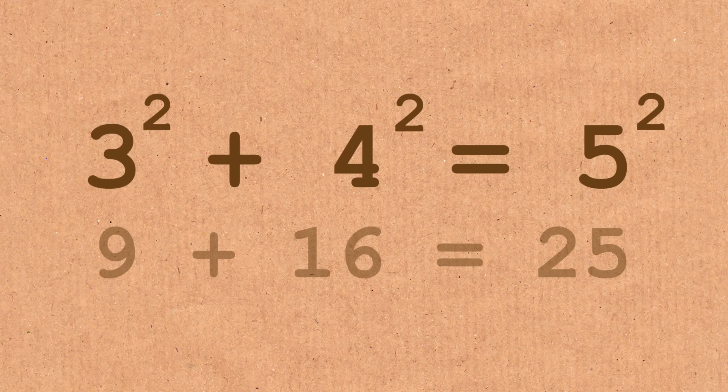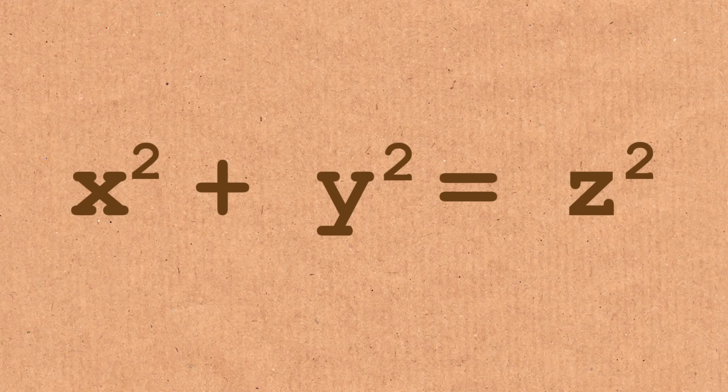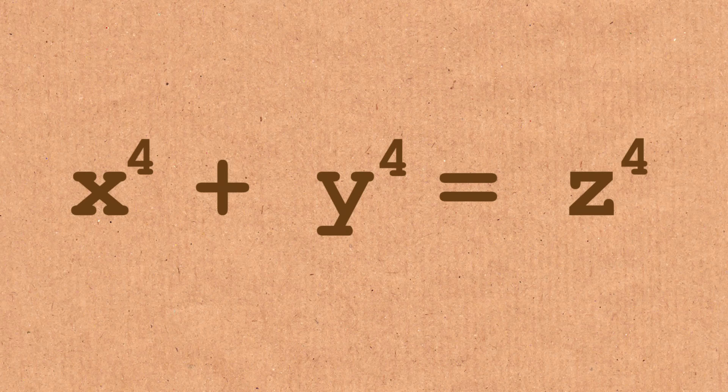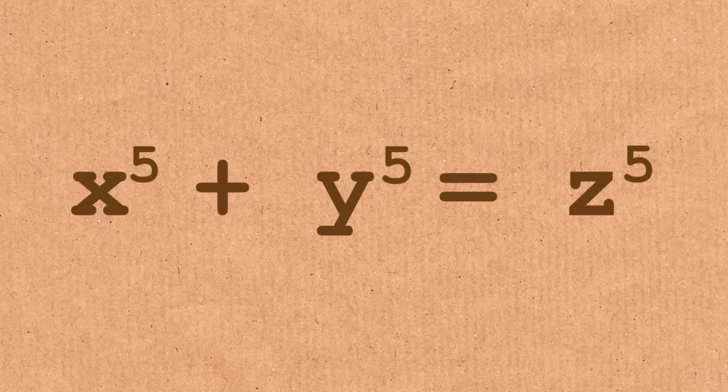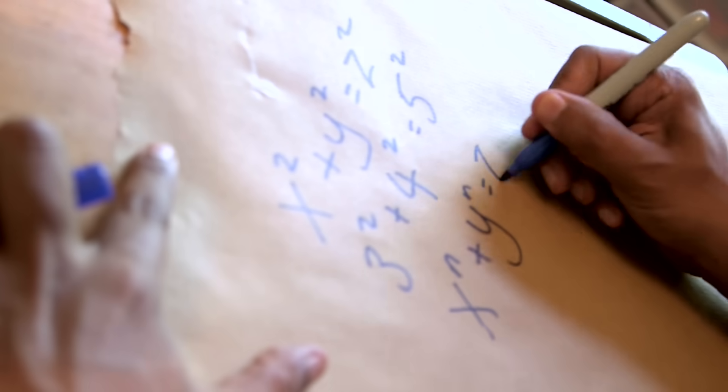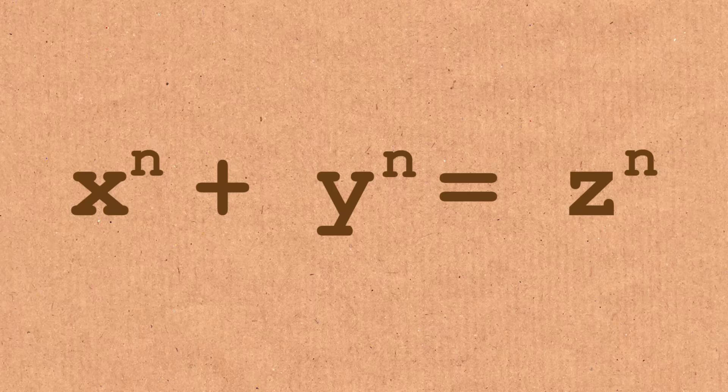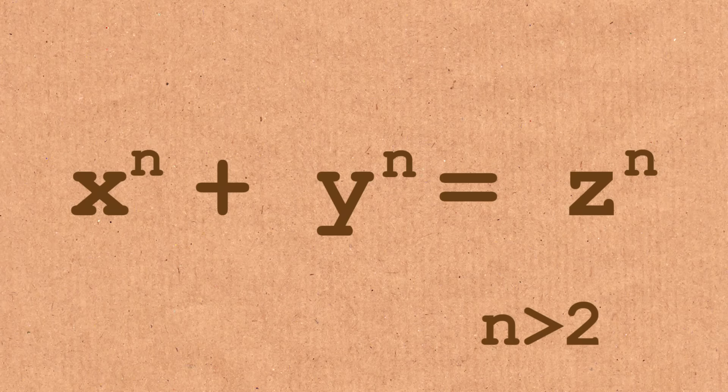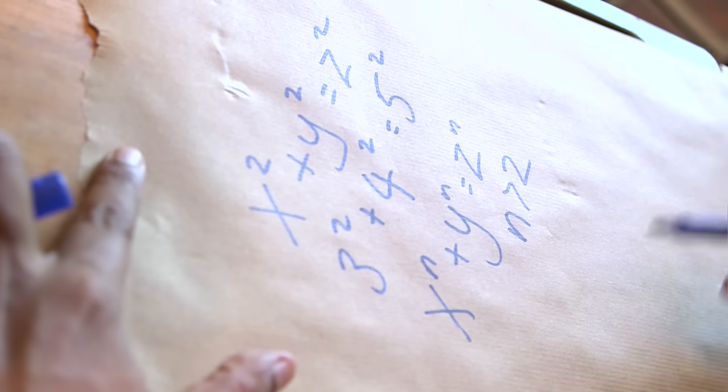Now Fermat asked himself the question, what about if I change this equation? So instead of it being x squared, what about if it's x cubed, or x to the fourth power, or y to the fourth power? Are there solutions to that equation? So in general we're talking about x to the n plus y to the n equals z to the n, where n is bigger than 2, does that equation have any whole number solutions?